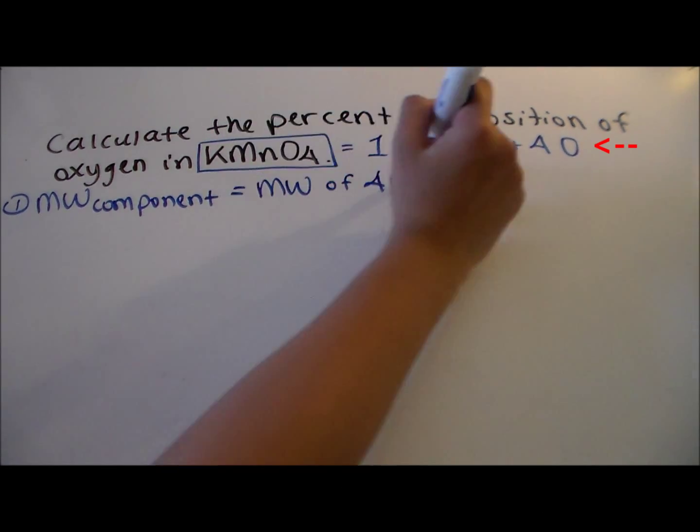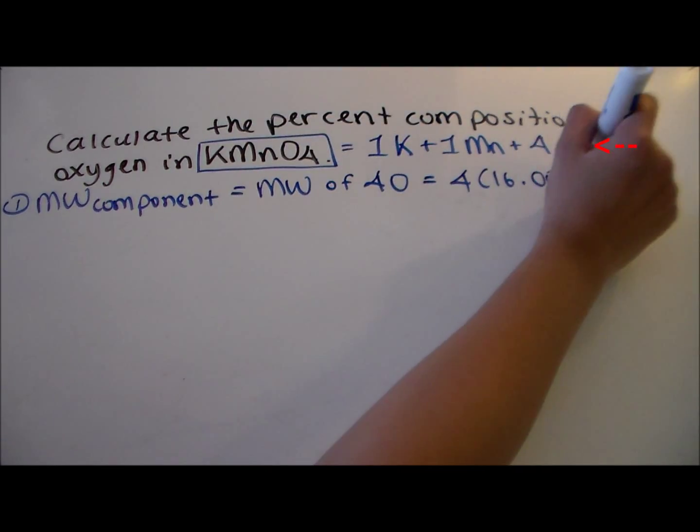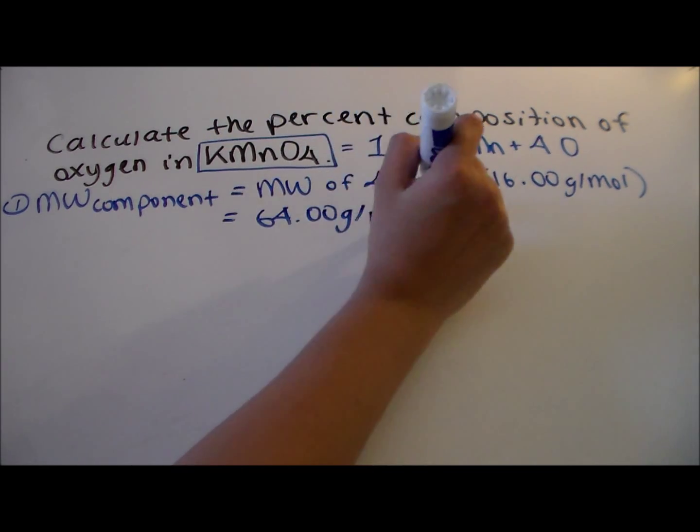In KMnO4, there are four oxygens, each with an atomic mass of 16 grams per mole, so the molecular weight of the component is 64 grams per mole.